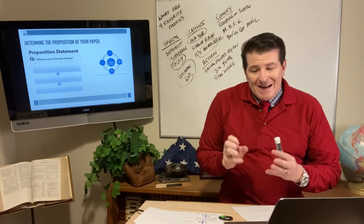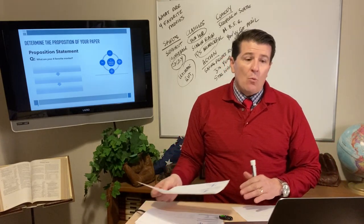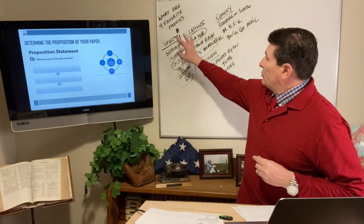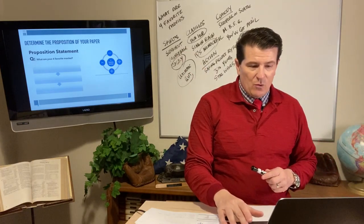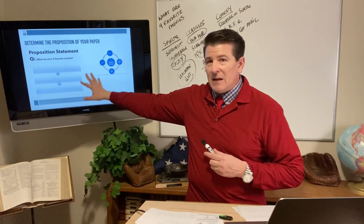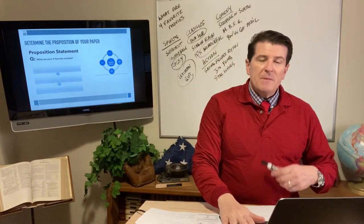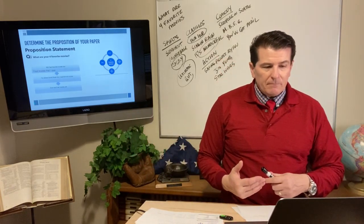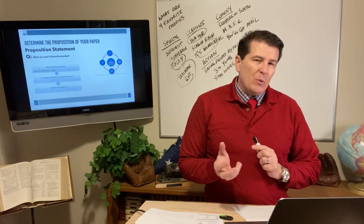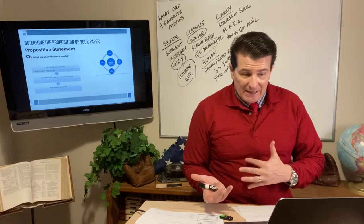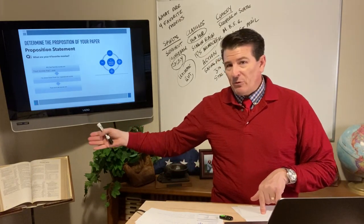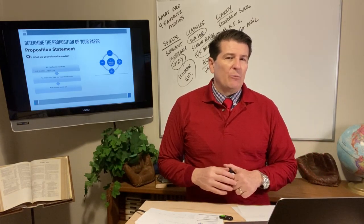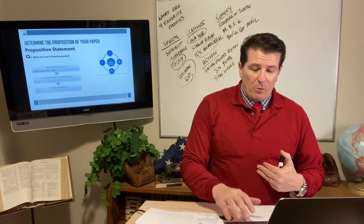Now I can determine what is actually going to be my final proposition statement. I can very easily just restate the question — that's another kind of brainstorming. I can write: my four favorite movies are... or I could tweak it: four movies that I love... or I always love these four inspirational movies... or four must-see movies are. See how I changed that up a little bit and twisted it to come up with my final proposition.